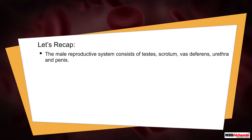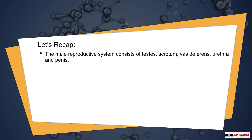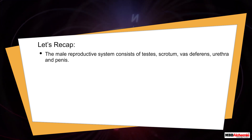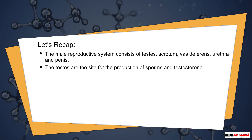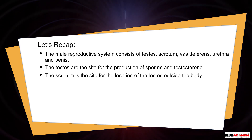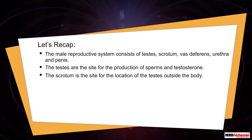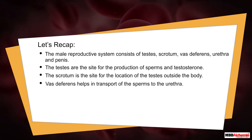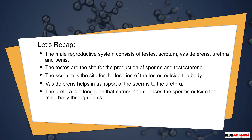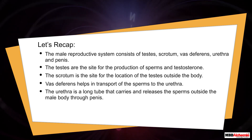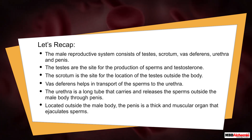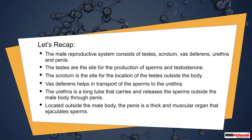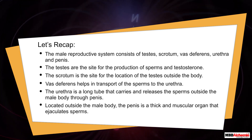Let's recap. The male reproductive system consists of testes, scrotum, vas deferens, urethra, and penis. The testes are the site for production of sperms and testosterone. The scrotum houses the testes outside the body. The vas deferens transports sperms to the urethra. The urethra carries and releases sperms outside the male body through the penis, which is a thick and muscular organ located outside the male body.